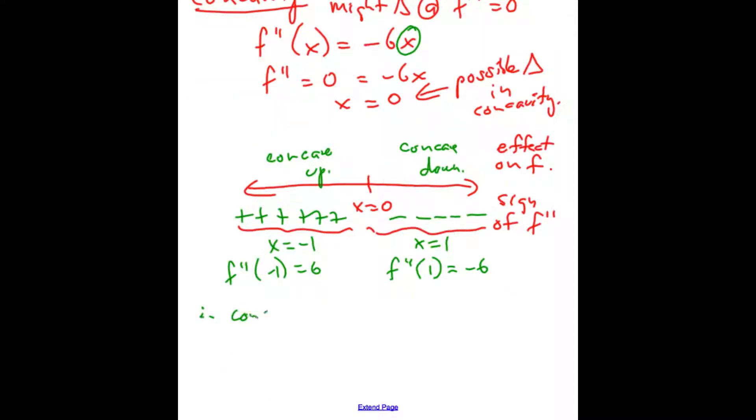So therefore, we're concave up if the second derivative is positive, and that occurred when x was less than zero. Concavity intervals are always open. And when x is concave down, the second derivative is negative when x is greater than zero.